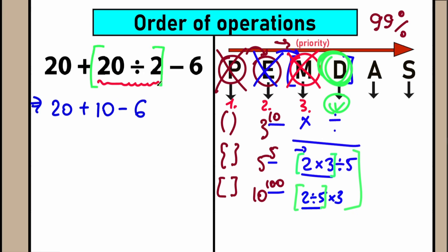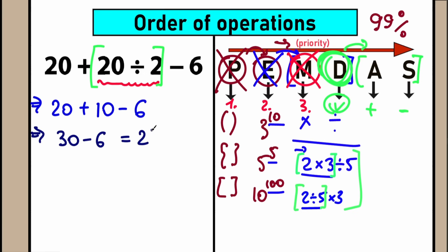Whenever we have a mixture of addition, division, and subtraction, we need to do division or multiplication first. Now let's solve the remaining part — addition and subtraction. A stands for addition, S stands for subtraction, and we perform them as a group in strict left-to-right order. So we have 20 plus 10 equals 30, and 30 minus 6 equals 24. That is our answer to this question.